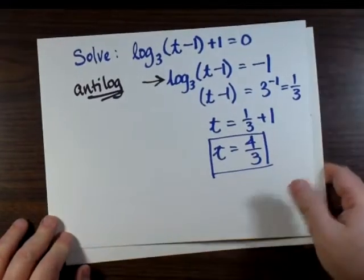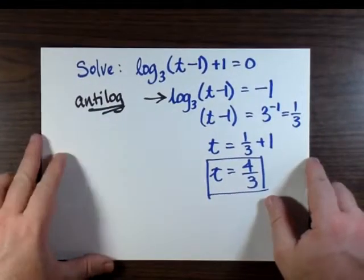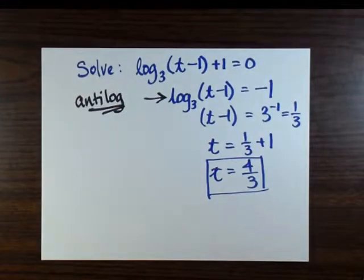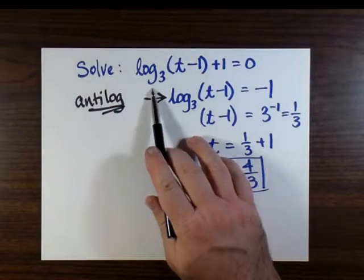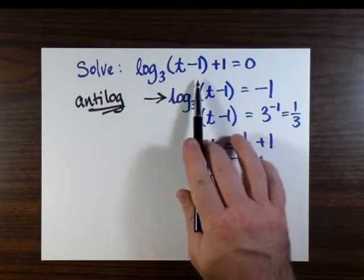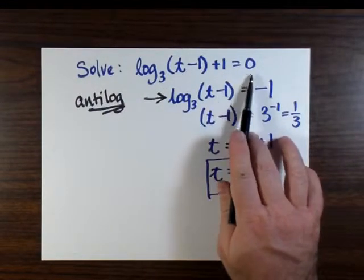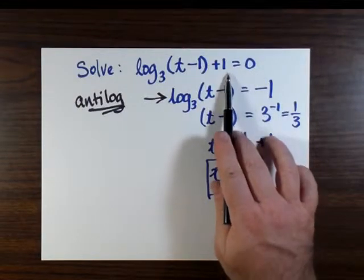So let's move on to the next problem. This time, let's just show that this kind of thing works in any base. And we'll look at the base 3 log of t minus 1 plus 1 equals 0, and we're going to solve for t in this one.